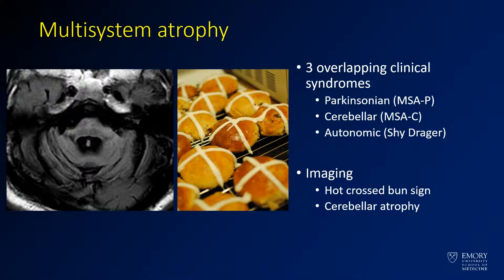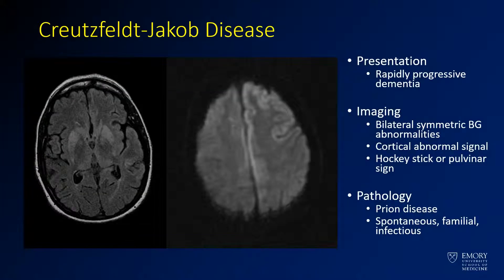MSA, or multisystem atrophy, shows the hot cross bun sign in the pons — the pons is atrophied with abnormal signal in the shape of a hot cross bun. There are multiple overlapping syndromes which can have this appearance. CJD shows abnormal signal in the basal ganglia, often symmetric involving the caudates, with the hockey stick sign in the medial thalamus. CJD can be familial, spontaneous, or acquired.